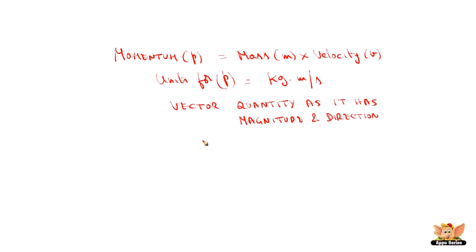So, momentum is termed as P is mass m into velocity termed as V. And the units for momentum is kg meter per second. The mass is always in kg and velocity in meter per second. And it is a vector quantity as it has magnitude and direction because it is dependent on velocity. And we also understand that momentum applies only to moving body. If the body is at rest, then the velocity is 0, hence momentum is 0.